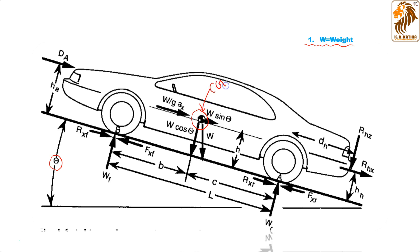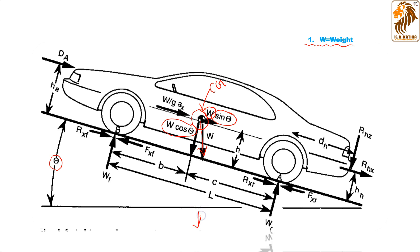As you can see, this is the CG of the vehicle and W is acting here. W is divided into two different components: W sine theta and W cosine theta. W is acting in the downward direction towards the gravitational force, and it equals mass times the acceleration due to gravity, so W = m × g. Keep in mind that these two components are required for further calculations.